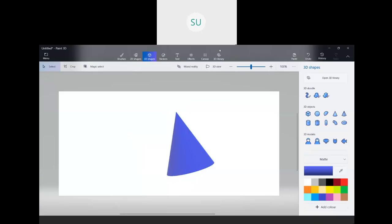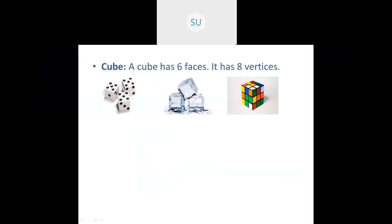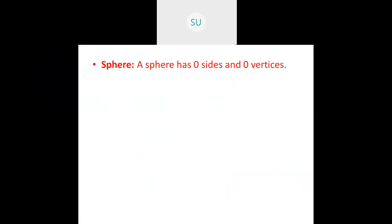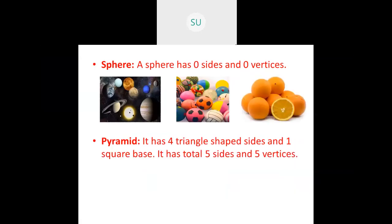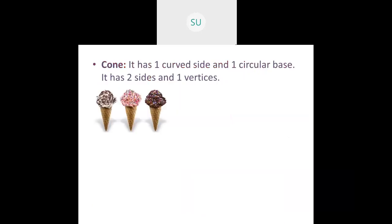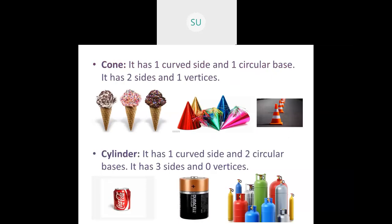Let's go through the examples of all solid shapes. For a cube: dice, ice cubes, and Rubik's cube. For a cuboid: matchbox, aquarium, and compass box. For a sphere: planets, balls, and oranges. For a pyramid: the pyramids of Egypt and a tent. For a cone: ice cream cones, birthday caps, and traffic cones. For a cylinder: batteries, cold drink tin cans, and gas cylinders.